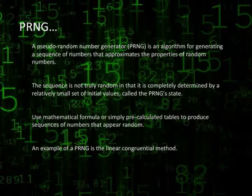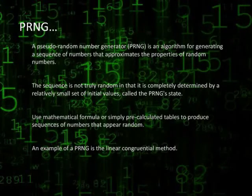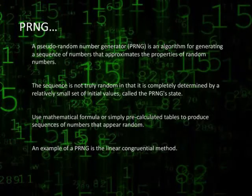Essentially, PRNGs are algorithms that use mathematical formulas or simply pre-calculated tables to produce sequences of numbers that appear random. A good example of a PRNG is the linear congruential method.